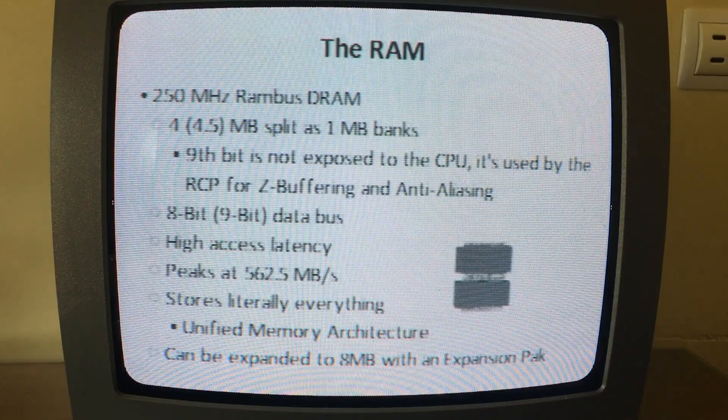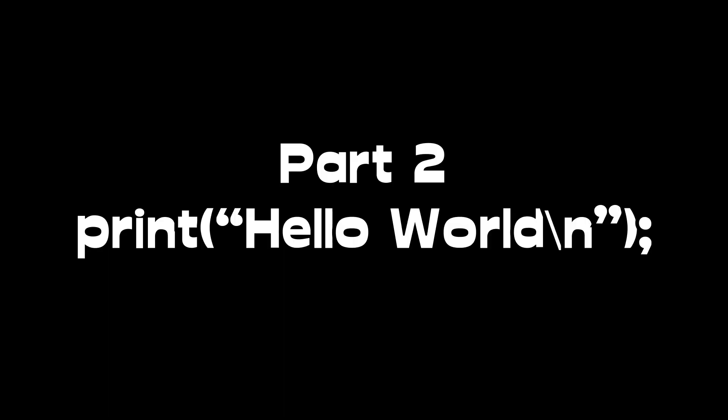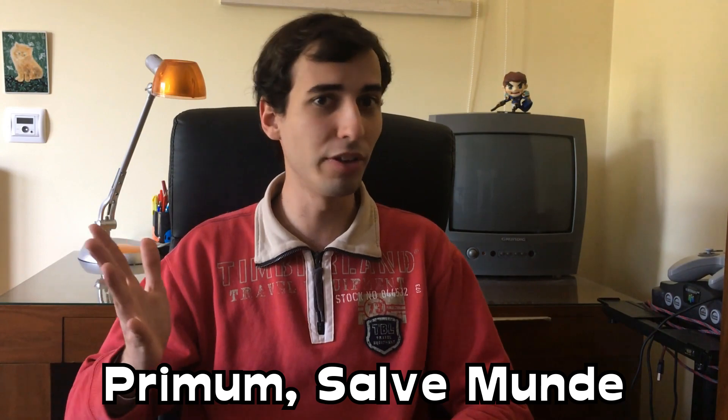Now that we got the boring part out of the way, we can actually try to get the custom code running. So as any programmer would know, once you complete the death trials and you pledge to Turing North, you're bound by the laws of the universe to Primum Salve Munde — meaning you have to print Hello World at the start of every single programming project. This is a little hard to do on the N64. As a programmer, all you're given is a kernel, which is a small bit of code that lets you manipulate parts of the hardware. The rest of the operating system has to be programmed by you. You can't just call a bit of code that says put this text on the screen — you have to program that bit of code, you have to program the screen, you need to program the font. All of this while worrying about where things are in memory and how much memory they take.